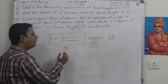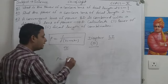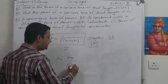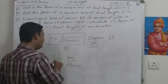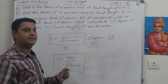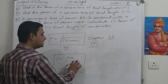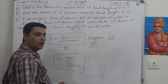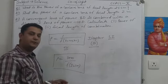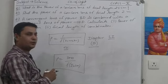Another form of the formula for power of the lens is P is equal to 100 upon f, where f is in centimeters. If the focal length of the lens is given in centimeters, we will use this formula for the calculation of power of the lens. If the focal length is given in meters, then we will use the first formula.